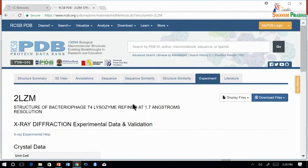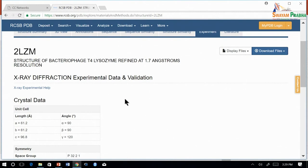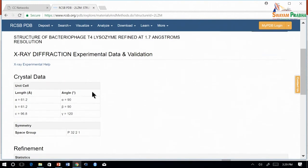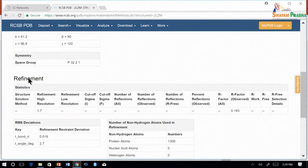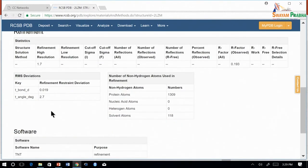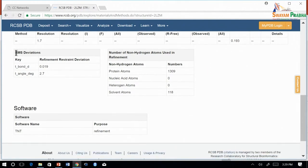Under the experiment tab you can see more metadata about the experiment which was used to get the structure. Since this is an x-ray diffraction experiment, you will find crystal data, the space group, as well as other RMS deviations and software.